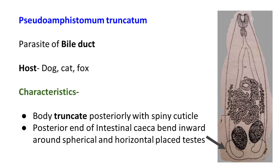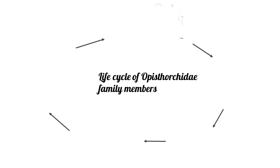Another parasite under this family is Pseudo-Amphistomum truncatum. It lives in the bile duct of dog, cat, and fox. The posterior part of the body is truncate, and the intestinal ceca bend inward around spherical and horizontally placed testes.